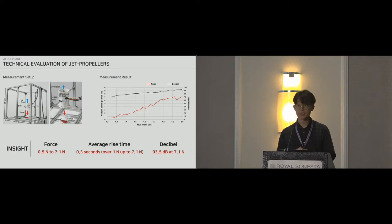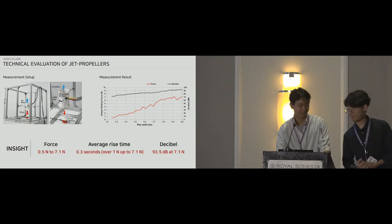Now, to build our system, we conducted a technical evaluation of our hardware. So, each propeller can generate a force of up to 7.1 newtons, has 0.3 seconds of rise time, and generates an average of 93.5 decibels, which you probably heard yesterday at the demo session. The force output of the propellers were linearly related to the pulse width input given, which allowed us to control the forces with relative ease. So, now that you have an idea of what we made and how we made it, soon we'll be sharing some of our studies that we conducted, and some of the interesting insights we got from our results.